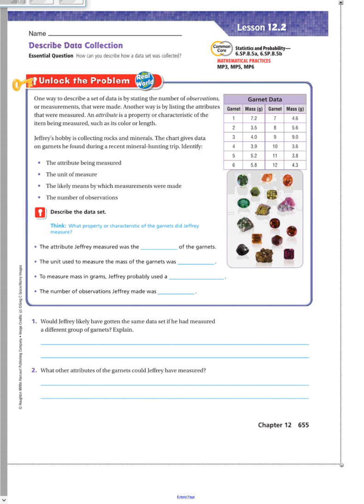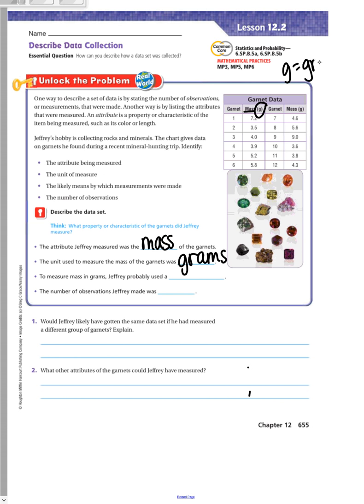What property or characteristic of the garnets did Jeffrey measure? The attribute Jeffrey measured was the mass of the garnets. So the mass. The unit used to measure the mass of the garnets was grams. So this is the mass, and then here they have the G, and we know that G stands for grams. That's a unit of measure.